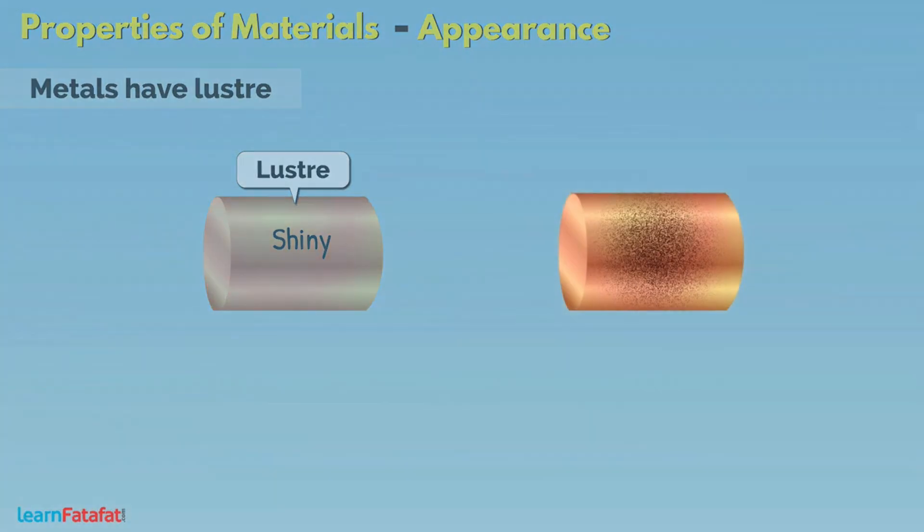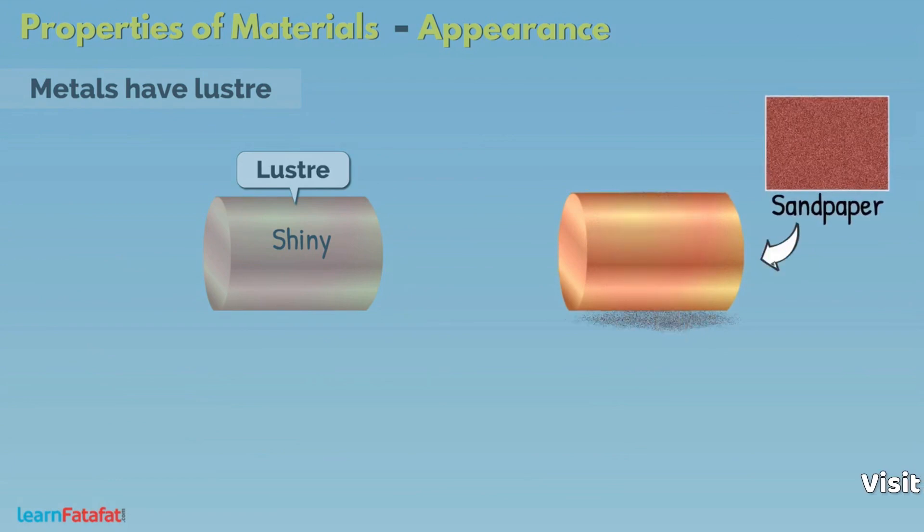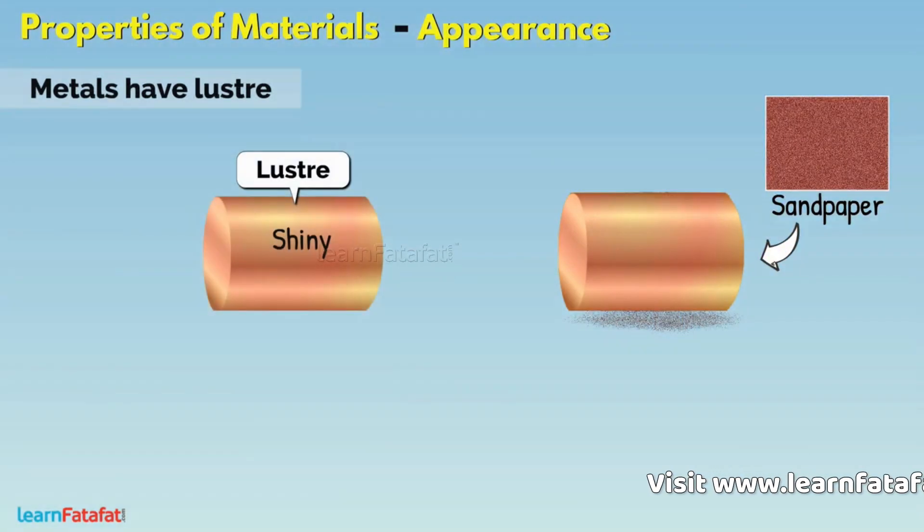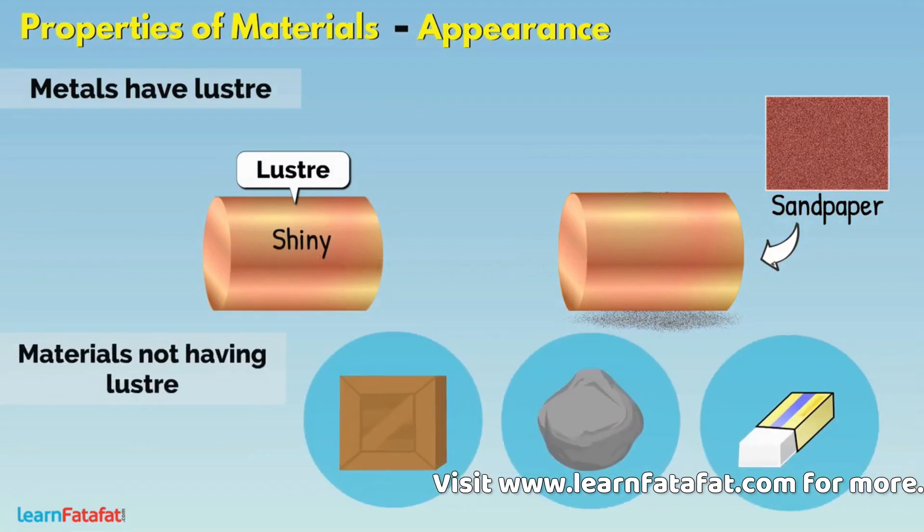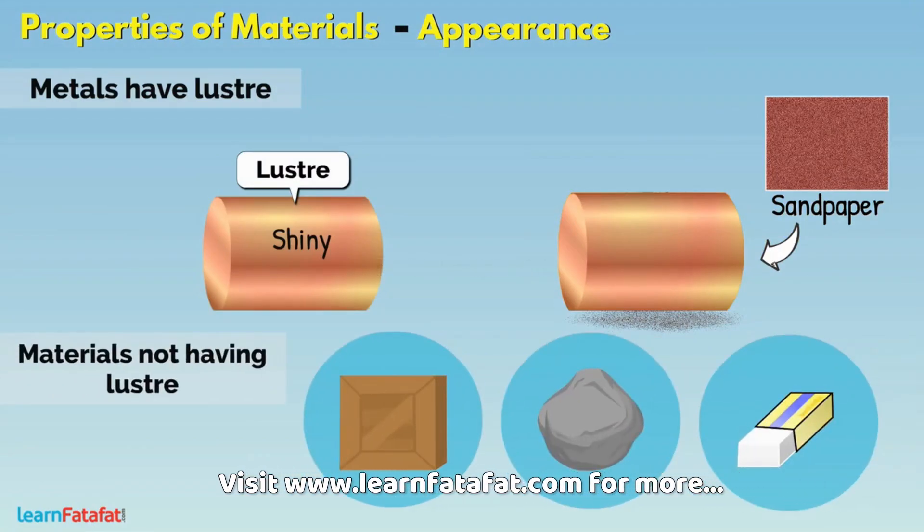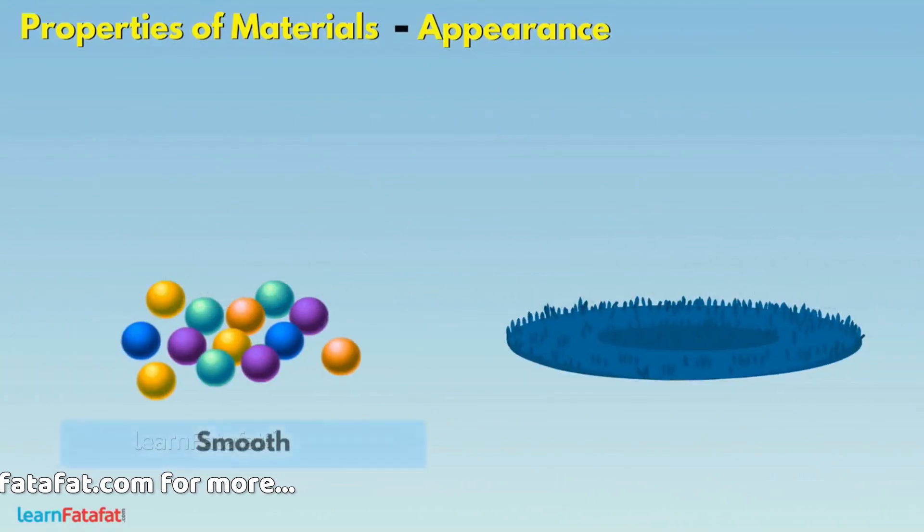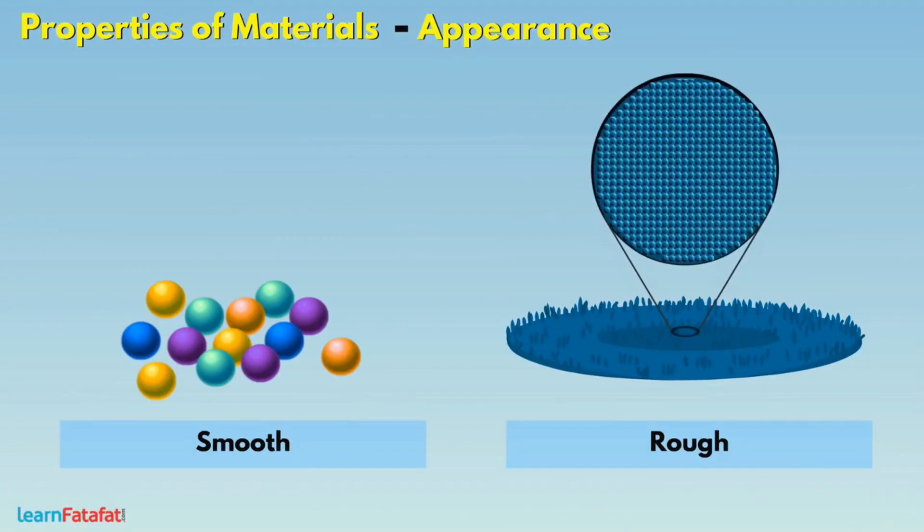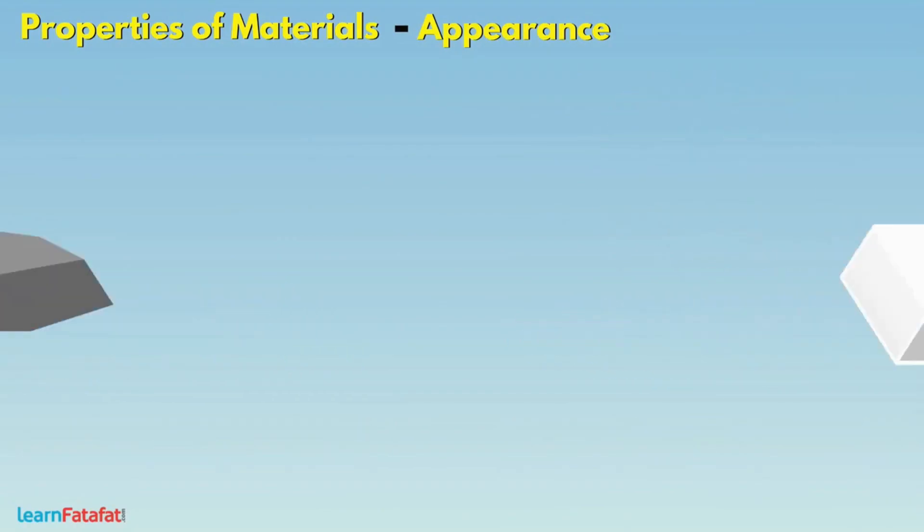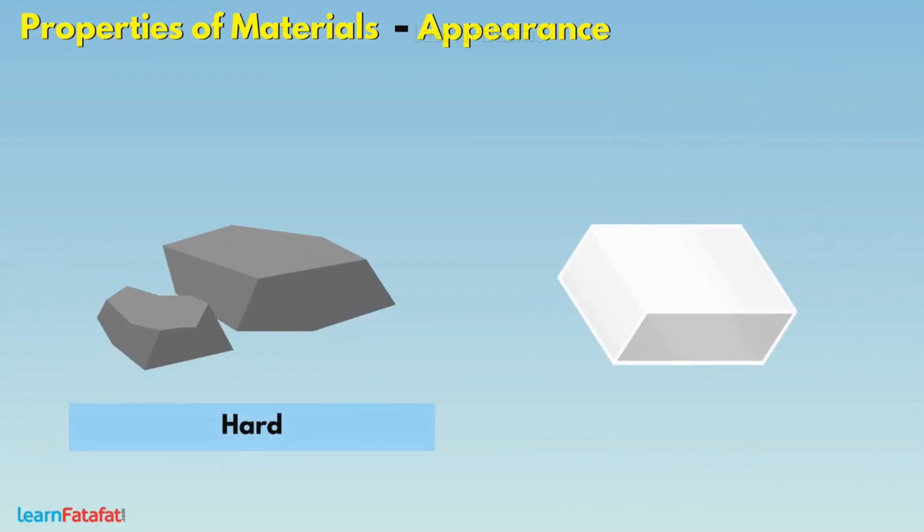If you don't see lustre on metal, try to rub the metal with sandpaper. You will see the metallic lustre. Other materials do not have lustre. If you touch some objects, they appear either smooth or rough. Similarly, some objects are hard while others are soft.